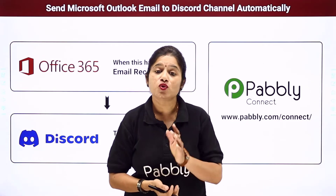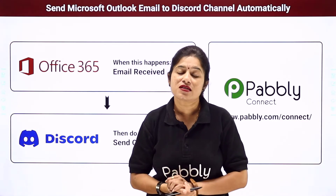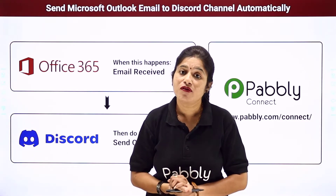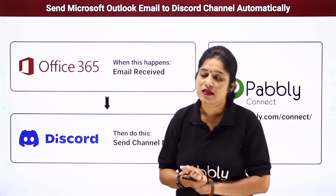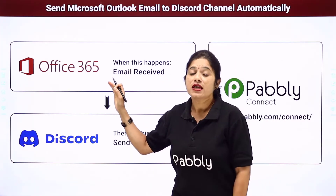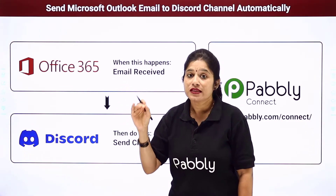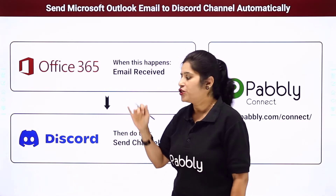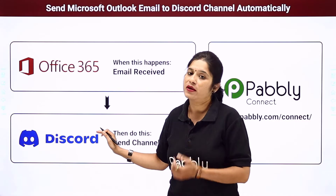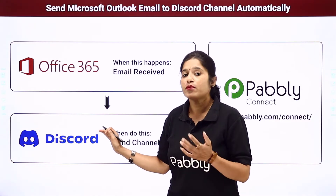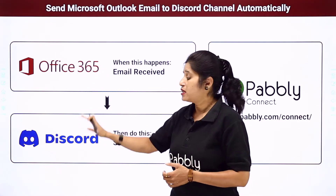Let's take an example that you are a business owner who is selling some products digitally and your customers are contacting you via email for product-related issues and queries. You might be receiving various mails in your Outlook, but you want that whenever a customer sends a mail related to your product, those specific mail details should be shared with your team on Discord channel so the team can work upon those emails. But the problem is there is no direct connection between your Outlook inbox and Discord channel.